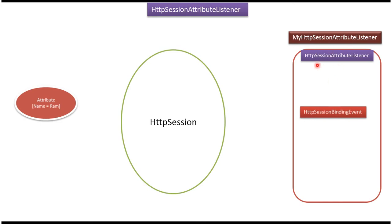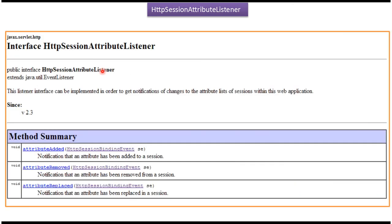Next we will see what is HttpSessionAttributeListener. HttpSessionAttributeListener is an interface and it has three methods: attributeAdded — this method will be called when an attribute is added in the session; attributeRemoved — this method will be called when an attribute is removed from the HTTP session; and attributeReplaced — this method will be called if an attribute is replaced in the HTTP session. All these methods receive HttpSessionBindingEvent.